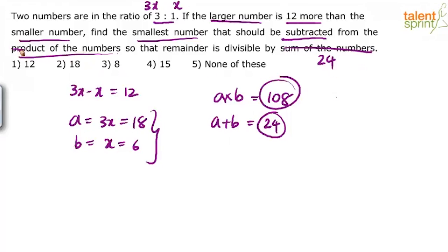We need to find the smallest number that should be subtracted from 108 so that the remainder is divisible by 24.